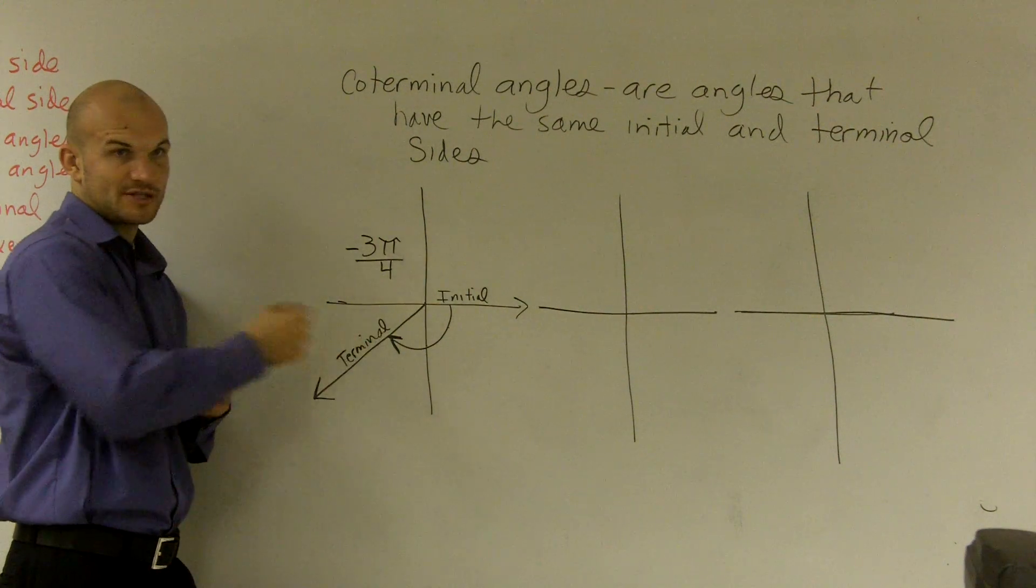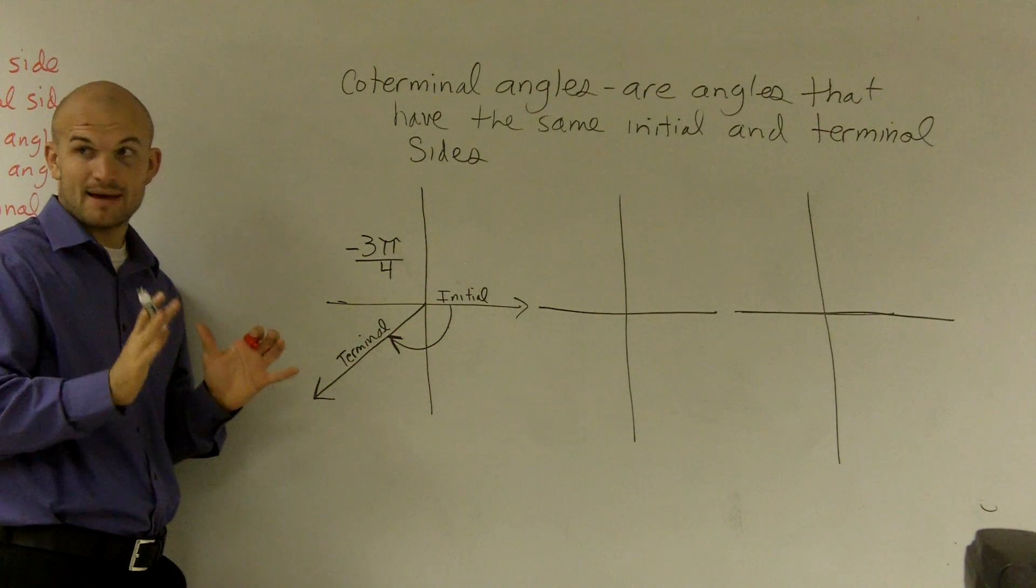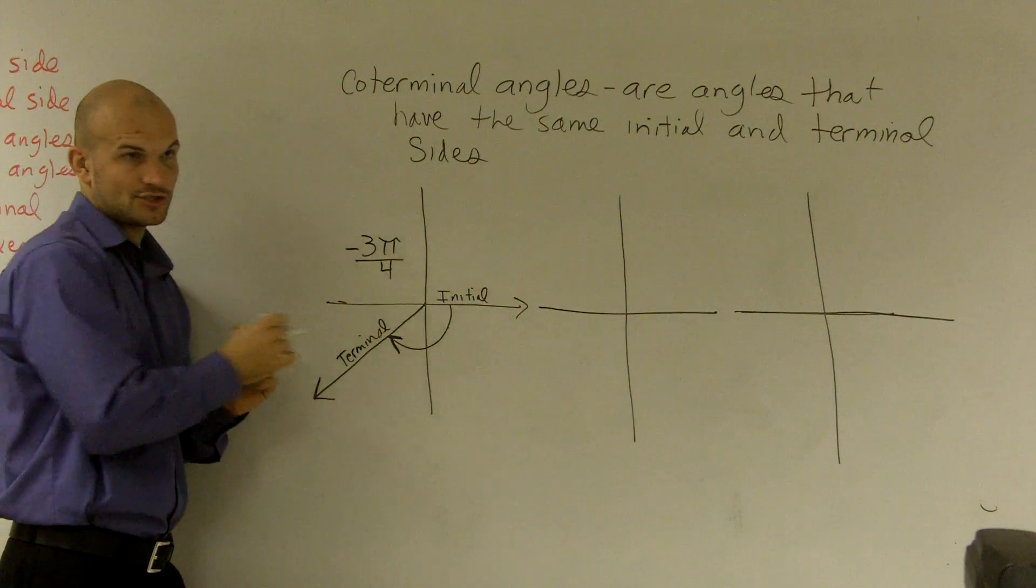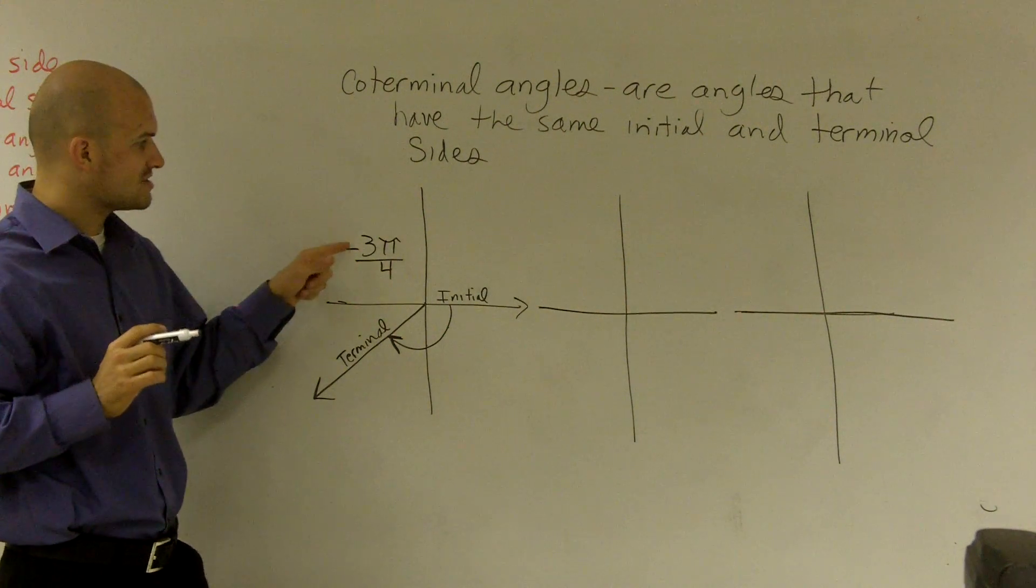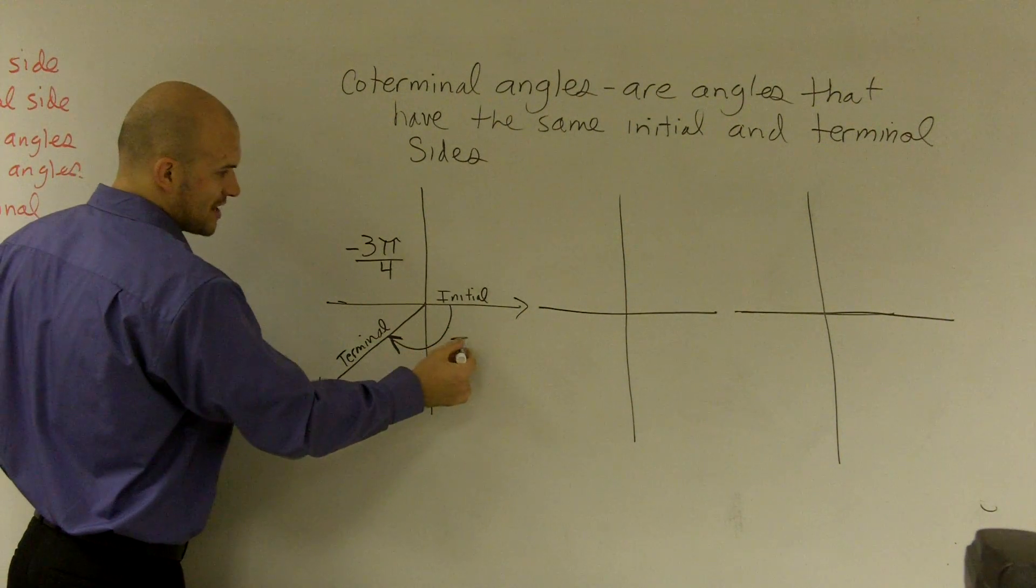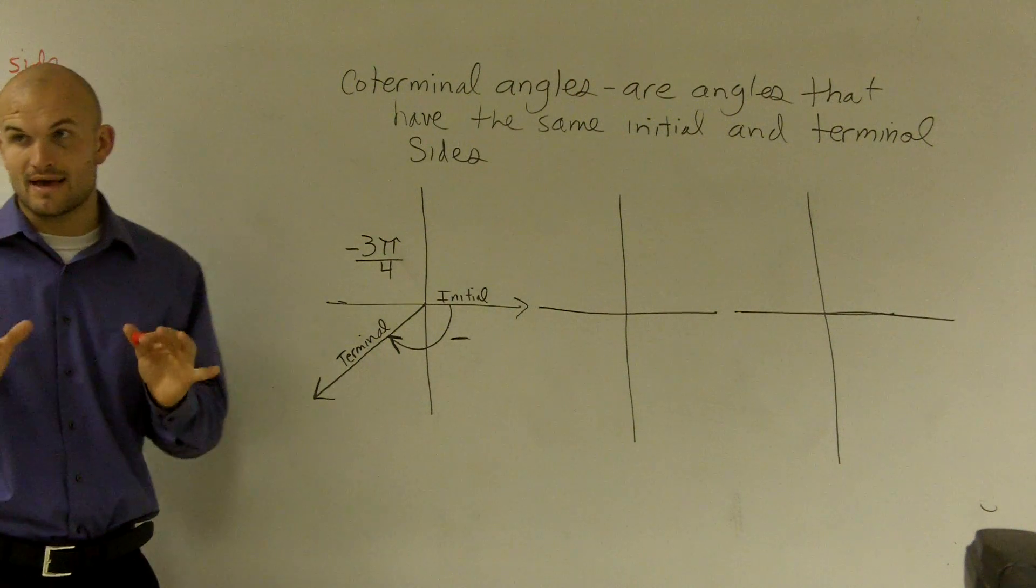So as it wraps around, here's my terminal side. Is everybody with me on that point right there? Initial and terminal side. The next thing is, notice this is 3π over 4. So I'm going in the negative direction. Is everybody with me on that?